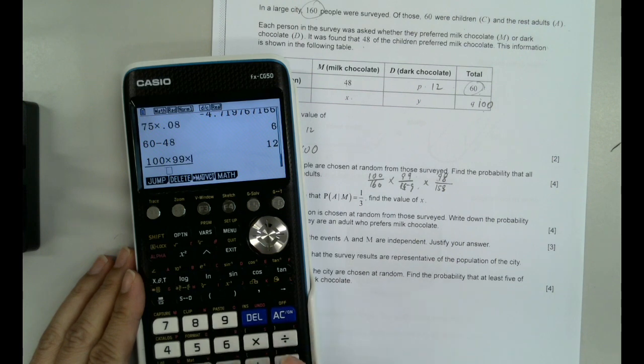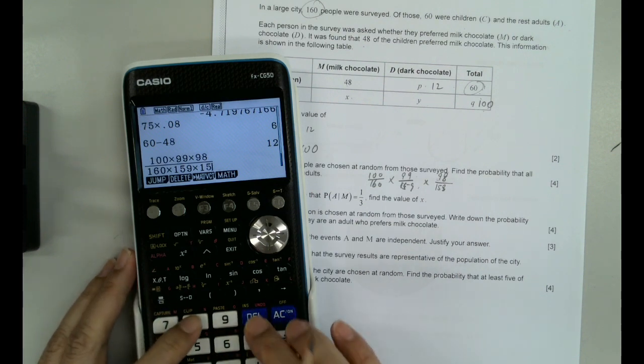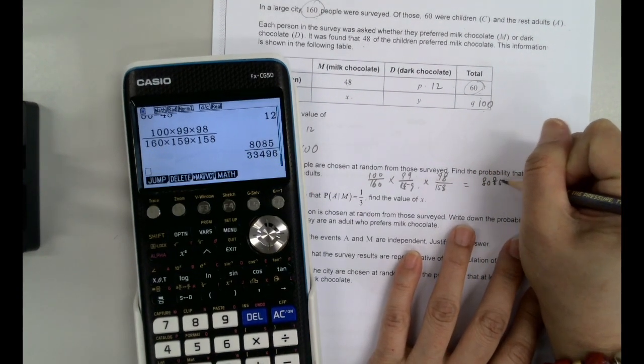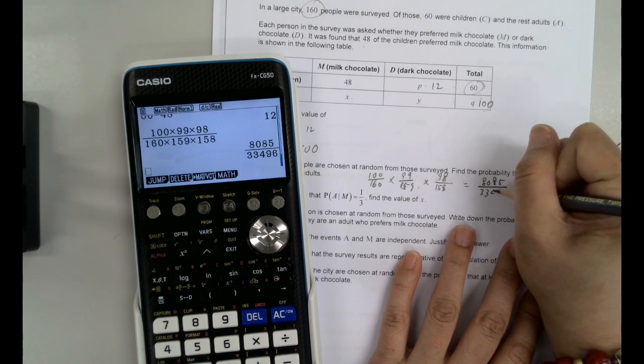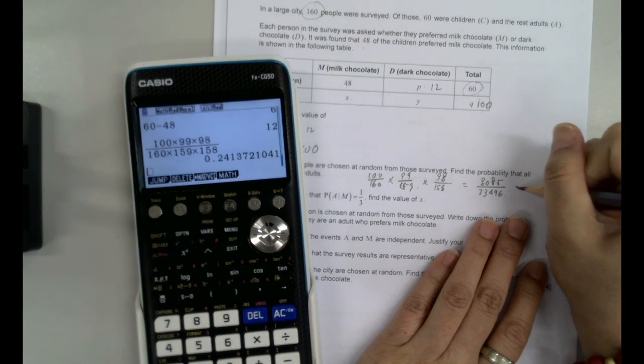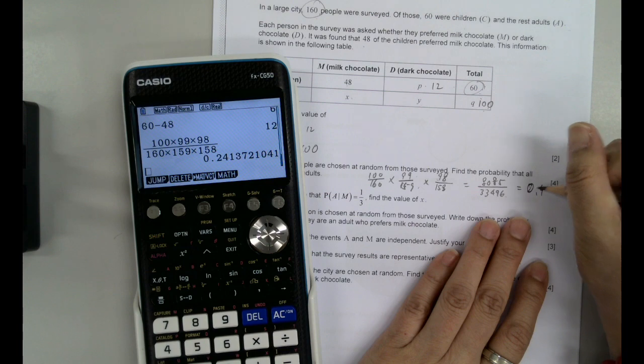100 times 99 times 98, and then 160 times 159 times 158. Lucky we got a calculator for this. So the fraction 0.805. This is the exact value. And the actual three sig figs, 0.241.